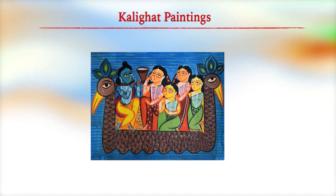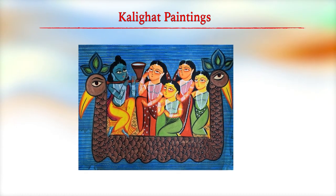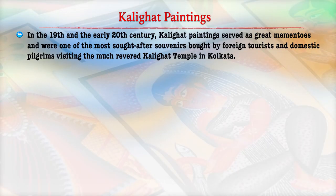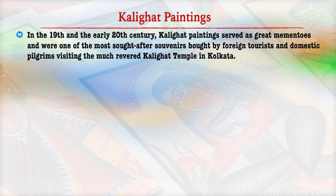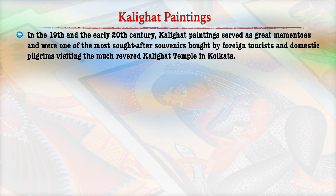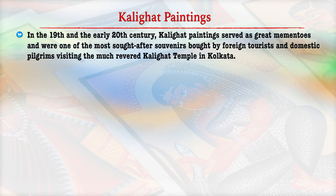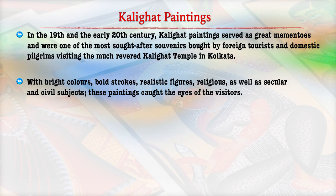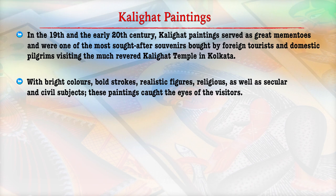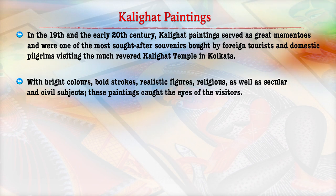Another form of regional painting is Kalighat painting. In the 19th and early 20th century, Kalighat paintings served as one of the greatest forms of painting and were among the most important souvenirs brought by tourists and domestic pilgrims visiting the Kalighat temple in Kolkata. With bright colors, bold strokes, realistic figures, religious figures, as well as secular and civil objects, these paintings were popular among visitors.